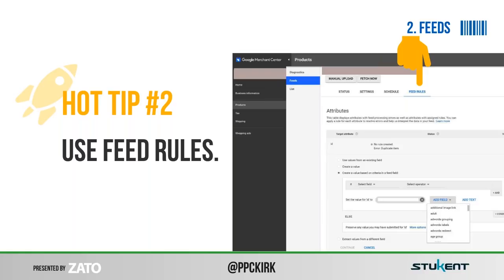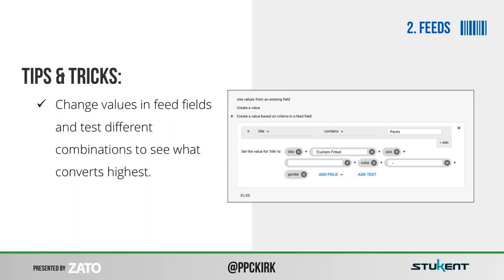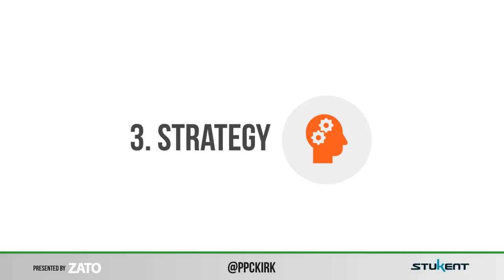Before we head off of feeds, one last thing I want to bring up: feed rules. A lot of people don't know about these, but in my opinion they're probably one of the biggest things that Google Merchant Center has done to improve itself over the last few years. What you can do with feed rules is go into a feed — without having to bribe your engineering team — and set specific values for products, categories, or groups. You can test things like titles and descriptions. So all of a sudden you have the power as the advertiser to run tests, add a couple of words into a title. Feed rules in Google Merchant Center is the way to do that with minimal disruption.